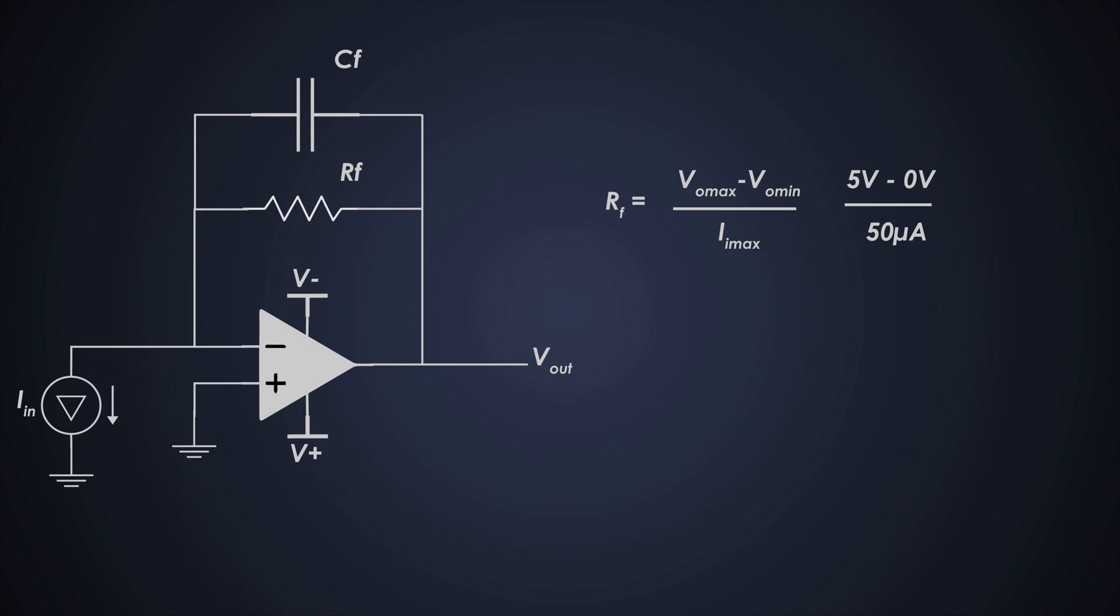The feedback resistor RF is calculated like this, which comes out to 100 kiloohms. To meet the circuit bandwidth requirement of 10 kilohertz, we need to calculate a feedback capacitor to ensure stability using this formula.